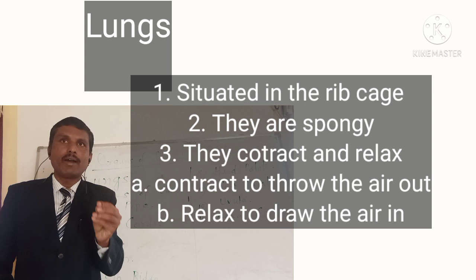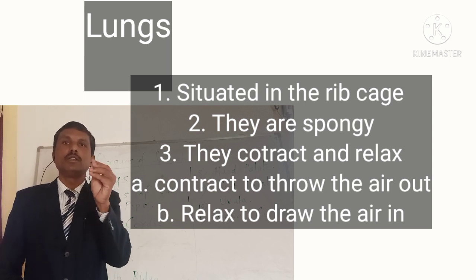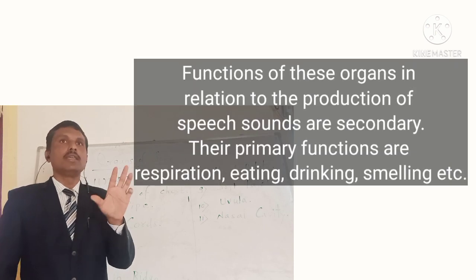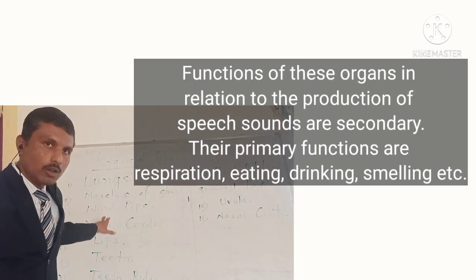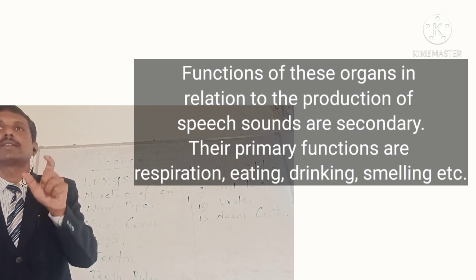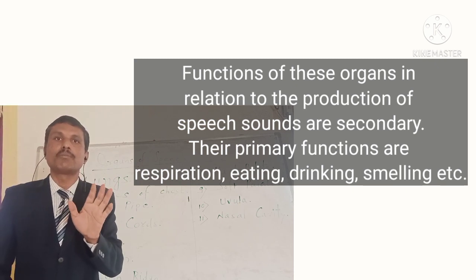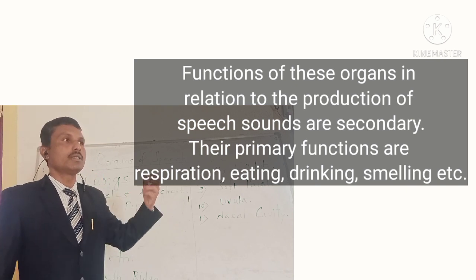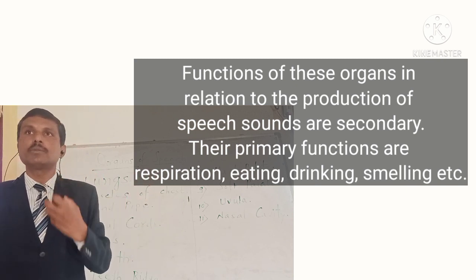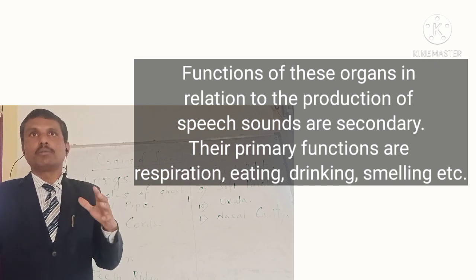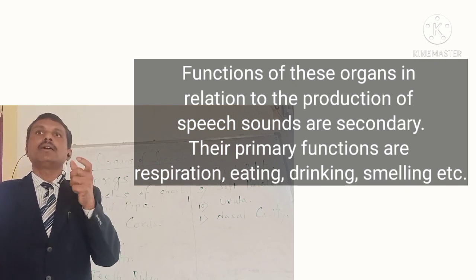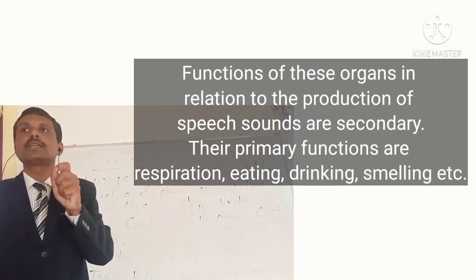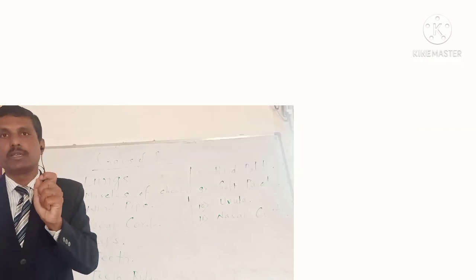This is the air provided by lungs which we use for the production of speech sounds. We have to remember that the functions of all the organs of speech in relation to the production of speech sounds are said to be secondary functions. Their primary functions are different. For instance, the primary function of the lung is to provide oxygen for the whole body's metabolic activities, while providing an air stream for the production of speech sounds is its secondary function.